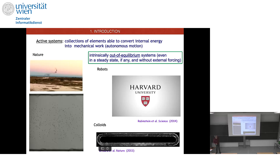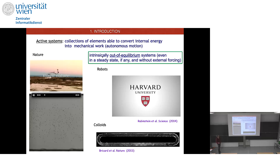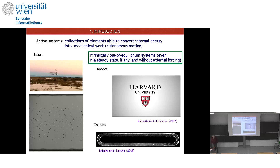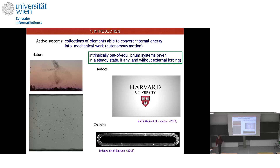Active systems, in very general terms from a physical perspective, are systems where the essential or relevant elements are able to convert internal energy into mechanical work. The natural inspiration comes from nature — you've all seen movies with flocks of starlings, trying to understand how without a clear leader they can self-organize. We can do this in the lab: these are Quincke colloids that break symmetry, start moving together, and form interesting patterns.